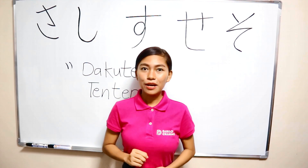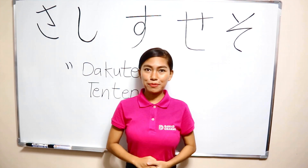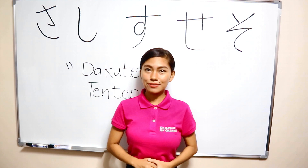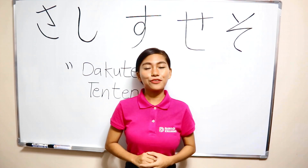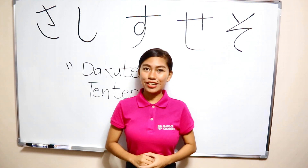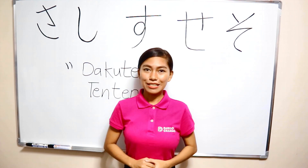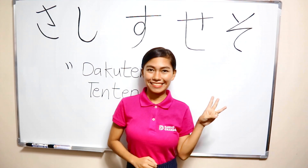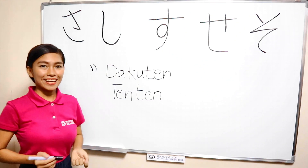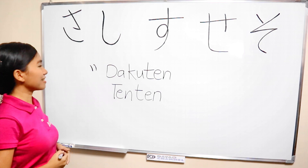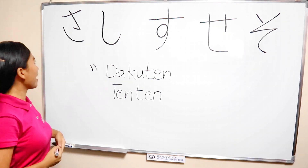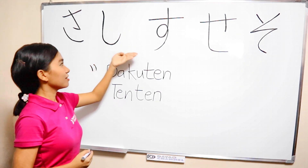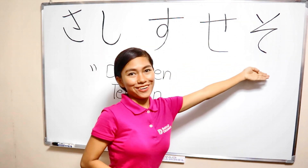But before that, do you remember how to write sa, shi, su, se, so? If you forget it, just visit Nihongo lesson number 3. Alright, as you can see we have here the sa, shi, su, se, so.